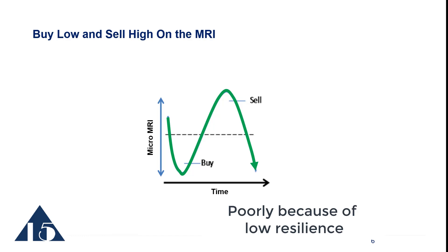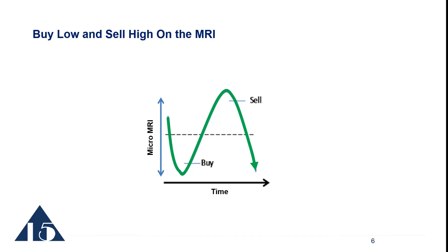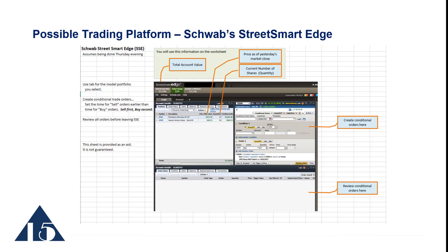When there is a shift in target weights for the ETFs in your model portfolio, it takes about 15 minutes to trade your retirement account. One of the trading platforms that many Focus 15 subscribers use is Schwab's Street Smart Edge. This is a screenshot of Street Smart Edge as it has been set up for a Focus 15 model portfolio.